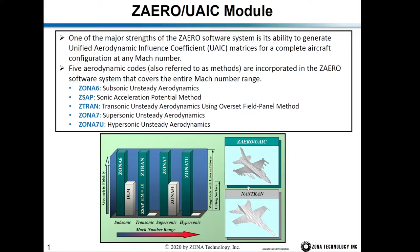One of the major strengths of ZAERO is it can generate the so-called unified aerodynamic influence coefficient matrices for a complete aircraft configuration at any Mach numbers — from subsonic to hypersonic. We have five methods incorporated in ZAERO. The first is called ZONA-6, which calculates unsteady aerodynamic forces at subsonic speed. The next is called Z-QUEN, which calculates unsteady aerodynamic forces. Another is called Z-SAP, which calculates unsteady aerodynamics at Mach 1. And ZONA-7 calculates unsteady aerodynamics at supersonic speed.